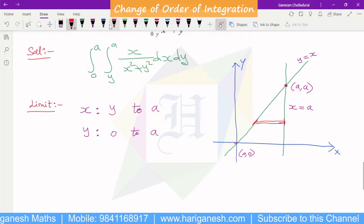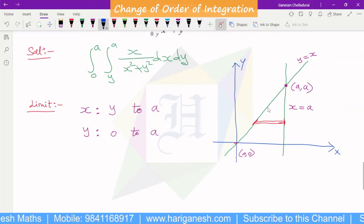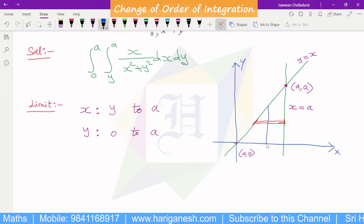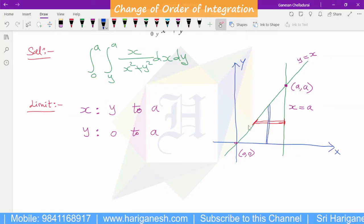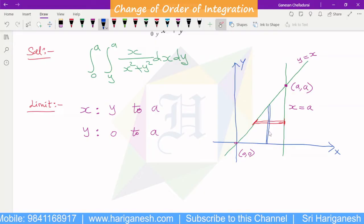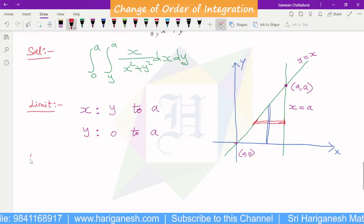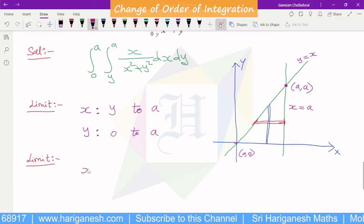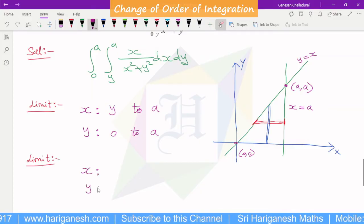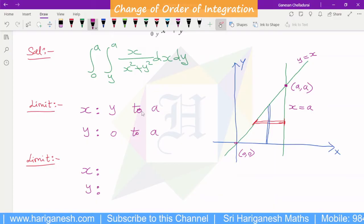This is the horizontal strip. For change of order of integration, horizontal strip to vertical strip. This is the change of limit. In the change of limit, x limit and y limit change. In this strip, you can see.